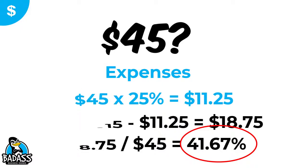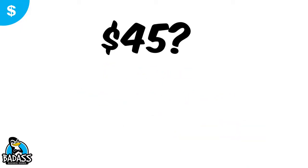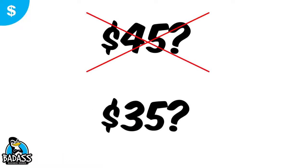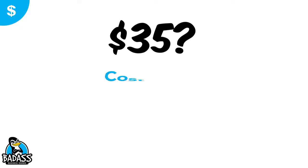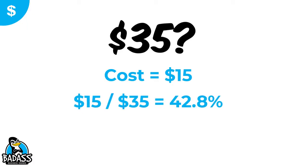Everything looks good. But now let's say you're chasing competitors and one has dropped their price to $35. You feel you have to match it. Our costs didn't change — still $15. So $15 divided by $35 means our cost percentage is now 42.8%. But remember, our goal is to keep costs at 40%, so we're already over, which means we have less money for expenses and profitability.